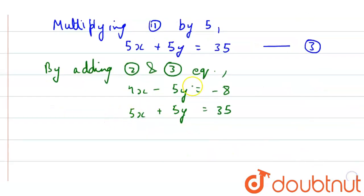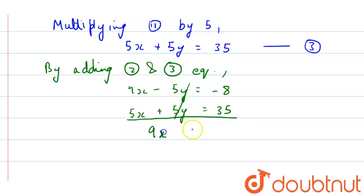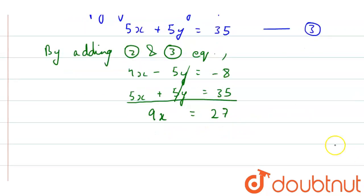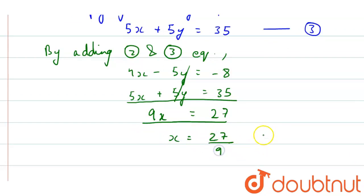By adding those two equations, the 5y terms cancel out, and what is left is 9x equals to 27. So x will be 27 divided by 9, which equals 3.